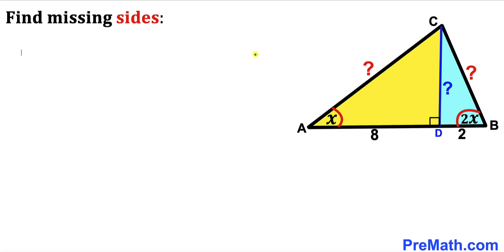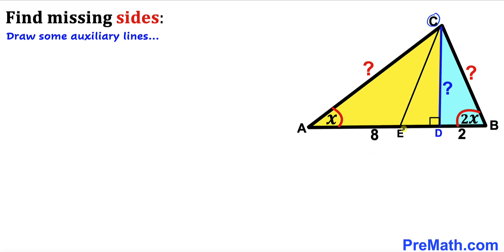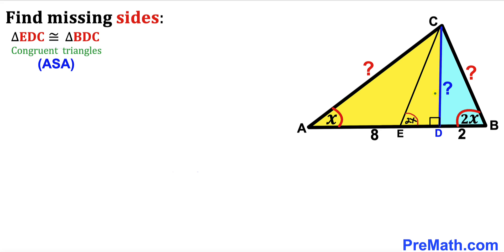Let's get started. First, let's draw some auxiliary lines. I've connected point C with point E on line AB such that angle CED is 2 times x — the same as angle CBD. These two angles are congruent, so triangle EDC is congruent to triangle BDC by the angle-side-angle congruency theorem.